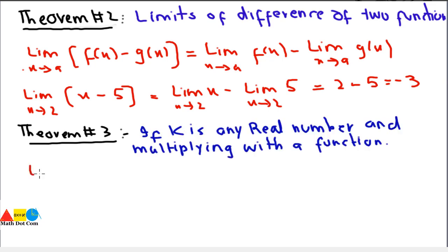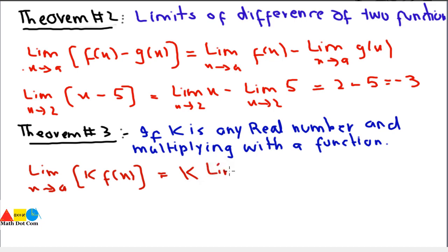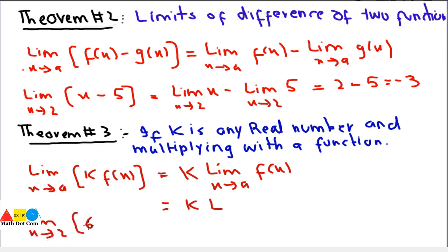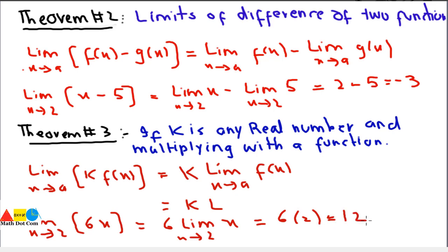Theorem number three: if k is any real number multiplying a function, then the limit as x→a of k·f(x) can be evaluated by taking k as common and applying the limit on the rest of the function, giving k·l. For example, the limit as x→2 of 6x equals 6 times the limit as x→2 of x, which equals 6 × 2 = 12. This is how you evaluate a function when a real constant is multiplying it.